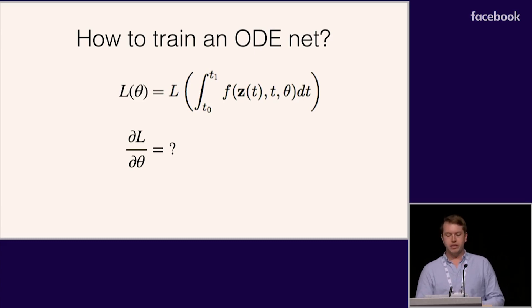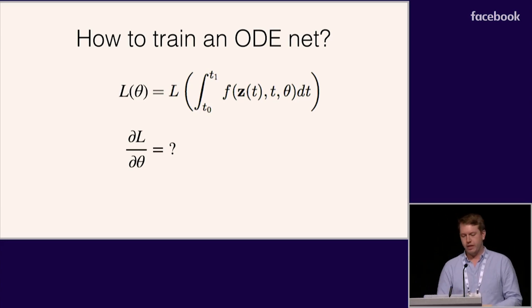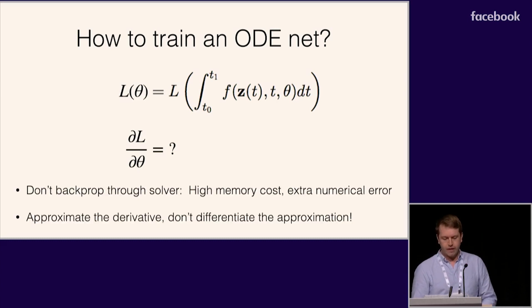First, because storing the intermediate operations of the solver adds high memory costs. Second, this approach adds numerical error to the gradients. More generally, we should always try to approximate the exact derivative and not differentiate the approximation.